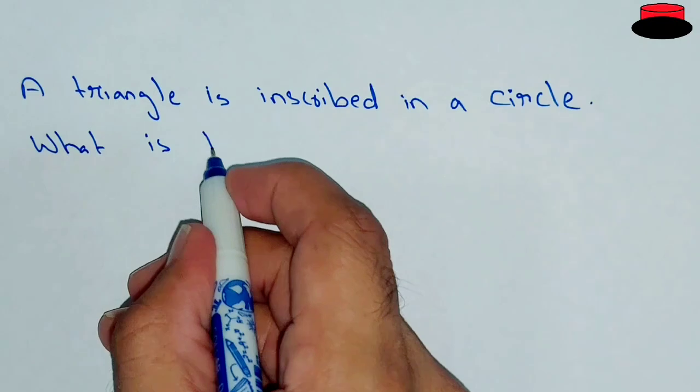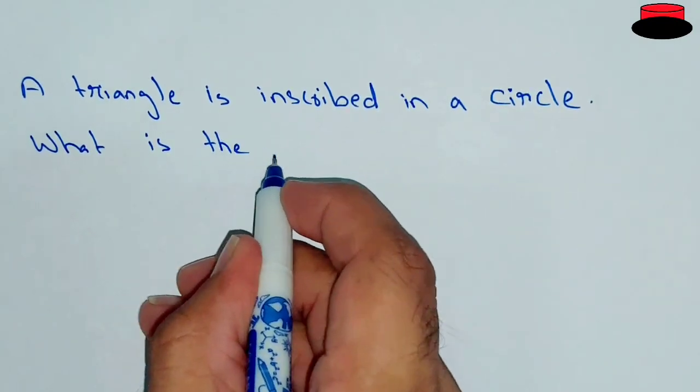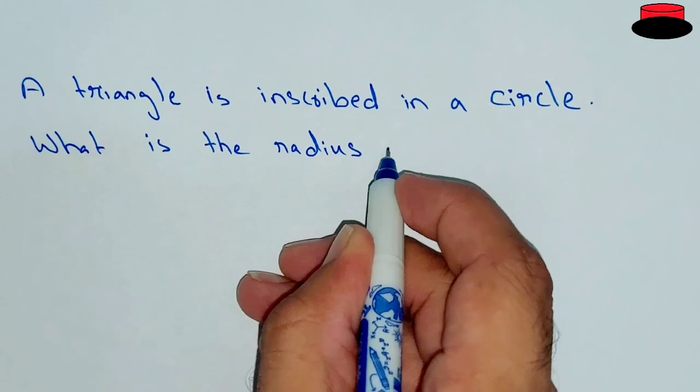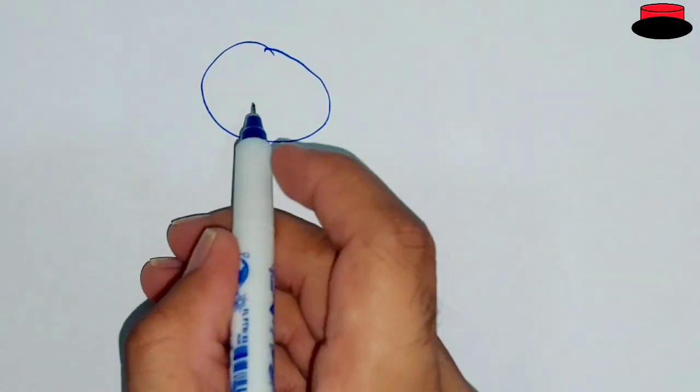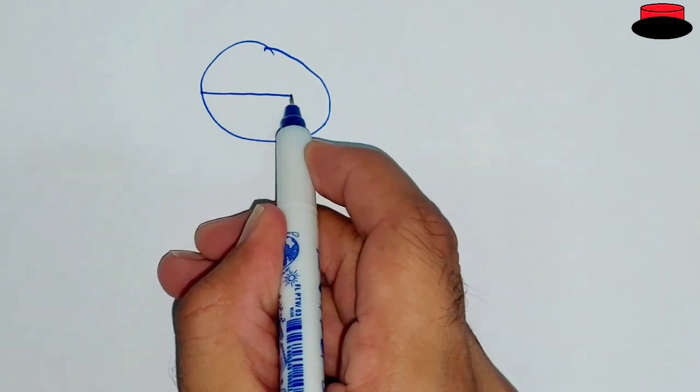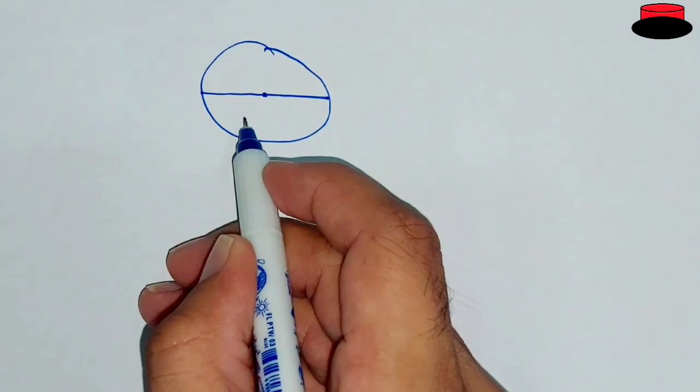What is the radius? So we have to find out the radius of the circle. Let's suppose this is the circle and this is the triangle inside the circle.